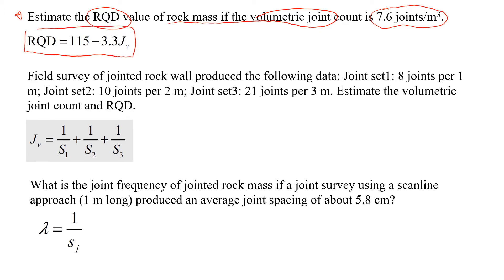So in this case we'll just add numbers and see how much we're gonna have for RQD. That will be 115 minus 3.3 times 7.6 joints per cubic meter. So that will give you about 89.9 percent. So this is the RQD value.